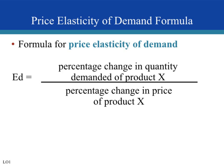Here we have the formula for price elasticity of demand. It's the percentage change in quantity demanded of product X divided by the percentage change in price of product X. Take a second to write this formula down, and let's talk about how you would calculate the percentage change.